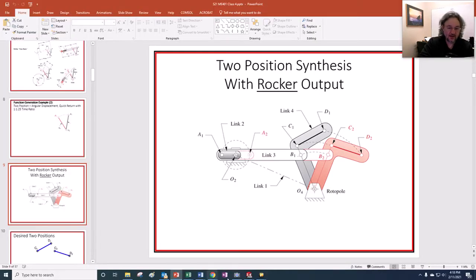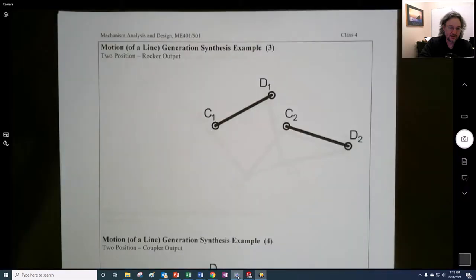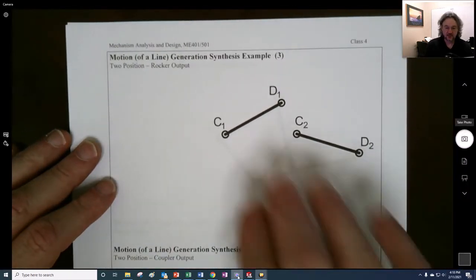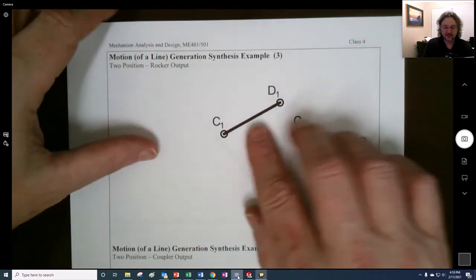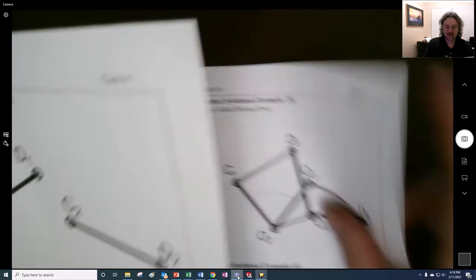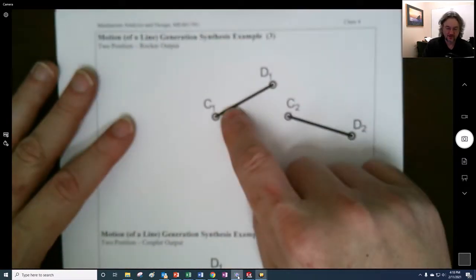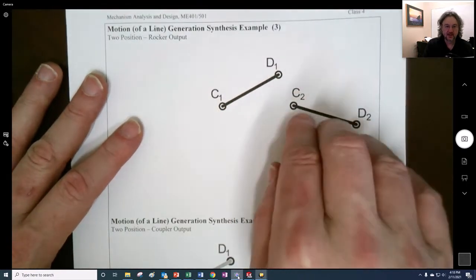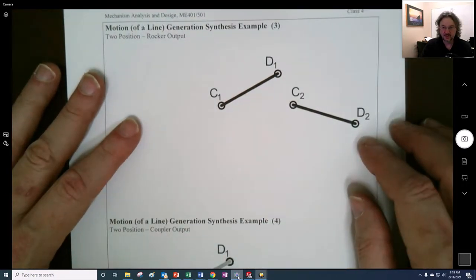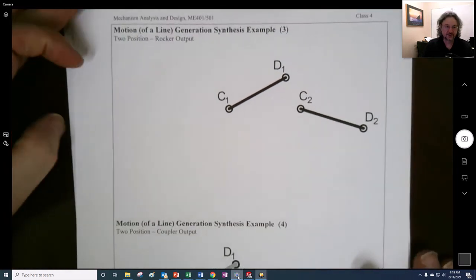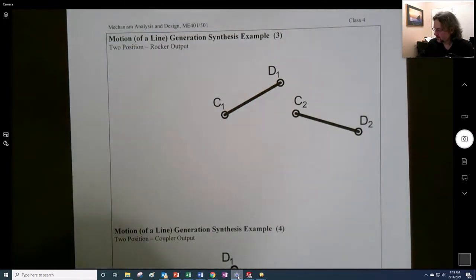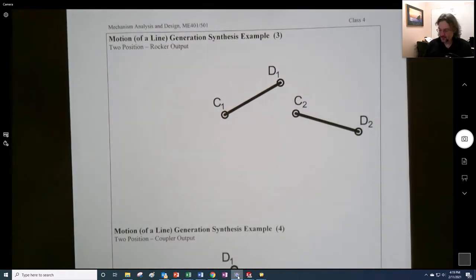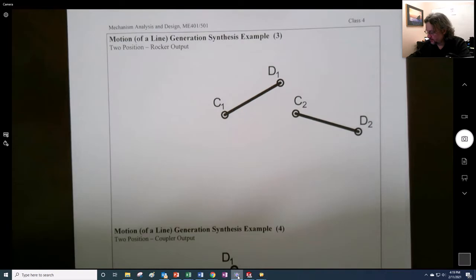So what we want to kind of imagine that we're doing here is we have these two positions. Like hypothetically here, we want for some reason to have a part that results in a linkage being in this orientation at these two locations.